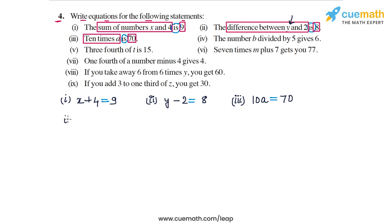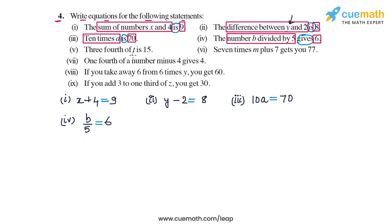In part 4, the statement says the number b divided by 5 gives 6. 'Gives' has the same meaning as equal to. So on the LHS you have b divided by 5, and on the RHS you have 6. So b by 5 is equal to 6 is your equation in part 4.